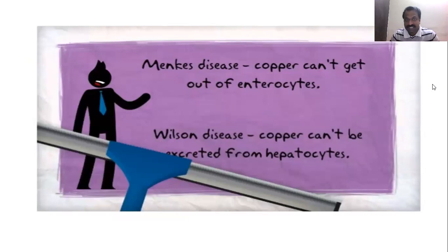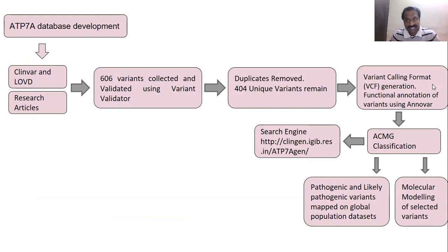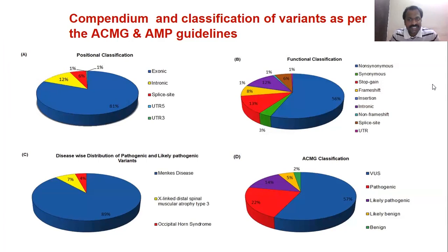Similar to the Wilson disease gene project, for Menkes disease we collected all variants reported so far from different data sources, obtaining 607 variants. After careful analysis, 404 variants were found to be unique. We then performed ACMG classification for these 404 variants. The majority of mutations are in the exonic region, with 12% in the intronic region, and additional mutations at splice sites, 5'UTR, and 3'UTR. ACMG classification shows 57% VUS, 22% pathogenic, 14% likely pathogenic, 5% likely benign, and 2% benign.